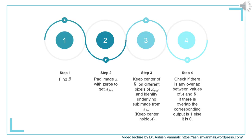The process of dilation can be carried out in 4 steps. In step 1, we find B-cap, the reflected version of B. In step 2, we pad image A with zeros to get A-pad. In step 3, we keep the center of B-cap at different locations of A-pad and identify the underlying sub-image, always ensuring the center stays inside A. In step 4, we check if there is any overlap between A and B-cap. If there is any overlap, the output will be 1; else the output will be 0.